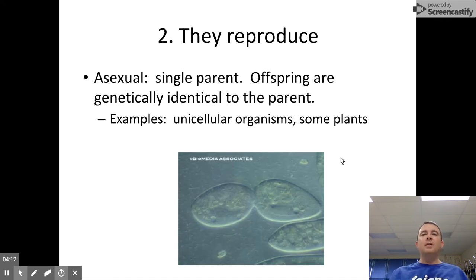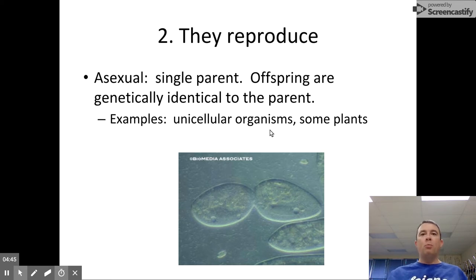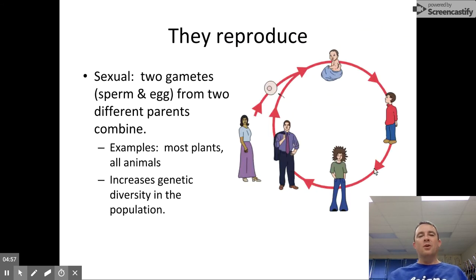The second characteristic: all living things can reproduce. There are basically two strategies for reproduction in the living world. Some species reproduce exclusively asexually. When you put the letter A in front of a word, it means 'not' — so not sexually. Asexually means there's one single parent, and the offspring are clones of that parent — they are genetically identical. Single-celled organisms reproduce this way almost exclusively, and sometimes plants reproduce asexually, though many people are surprised to learn that plants do also reproduce sexually.